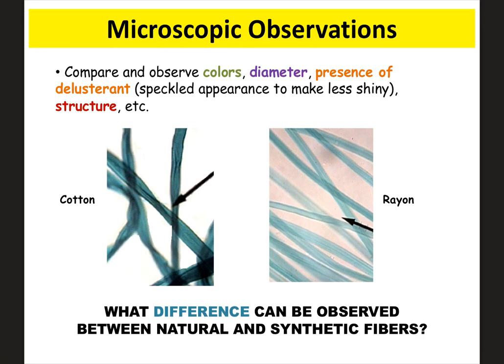Comparing natural and synthetic fibers under the microscope, cotton on the left is a natural fiber and rayon on the right is synthetic. You can clearly see how the synthetic fiber is nicely organized versus the natural fiber, which looks less organized because it comes from nature. You can observe color and thickness differences, and also look for delustrants — additives that make very shiny man-made fibers less shiny.